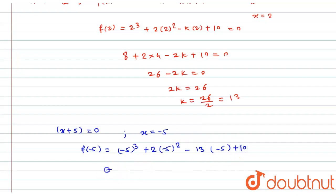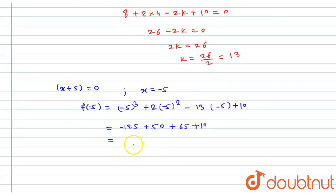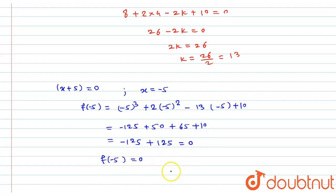The cube of minus 5 is minus 125. Then 5 squared is 25, times 2 gives 50. Minus times minus gives plus, and 13 times 5 is 65. So we have minus 125 plus 50 plus 65 plus 10. Adding 50, 65, and 10 gives plus 125. Therefore minus 125 plus 125 equals 0. Since f(minus 5) equals 0, (x plus 5) is also a factor of the given polynomial.